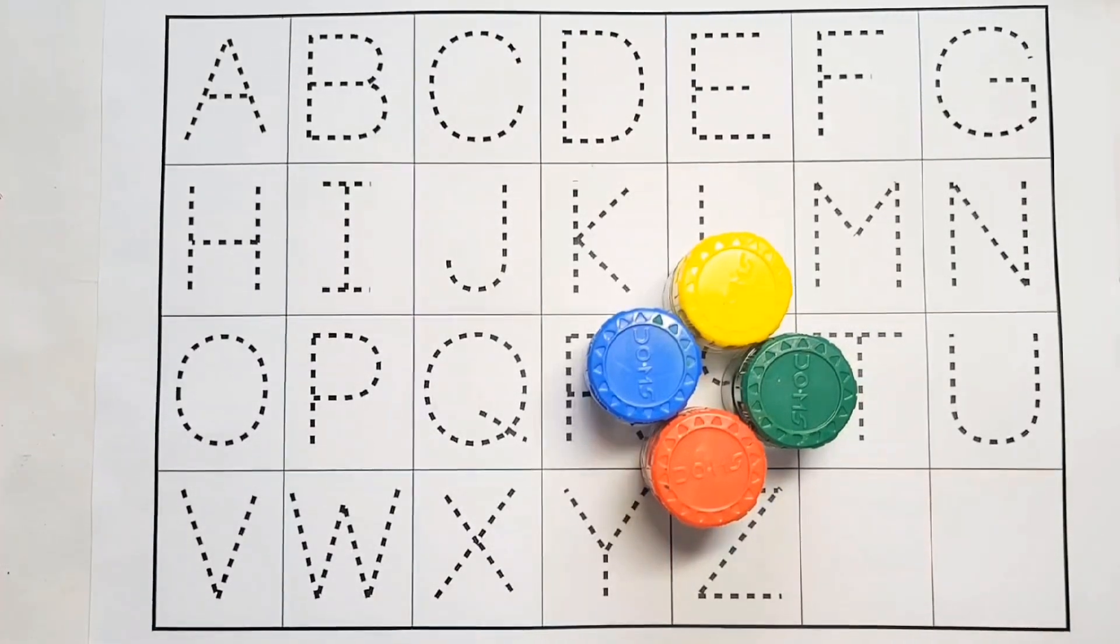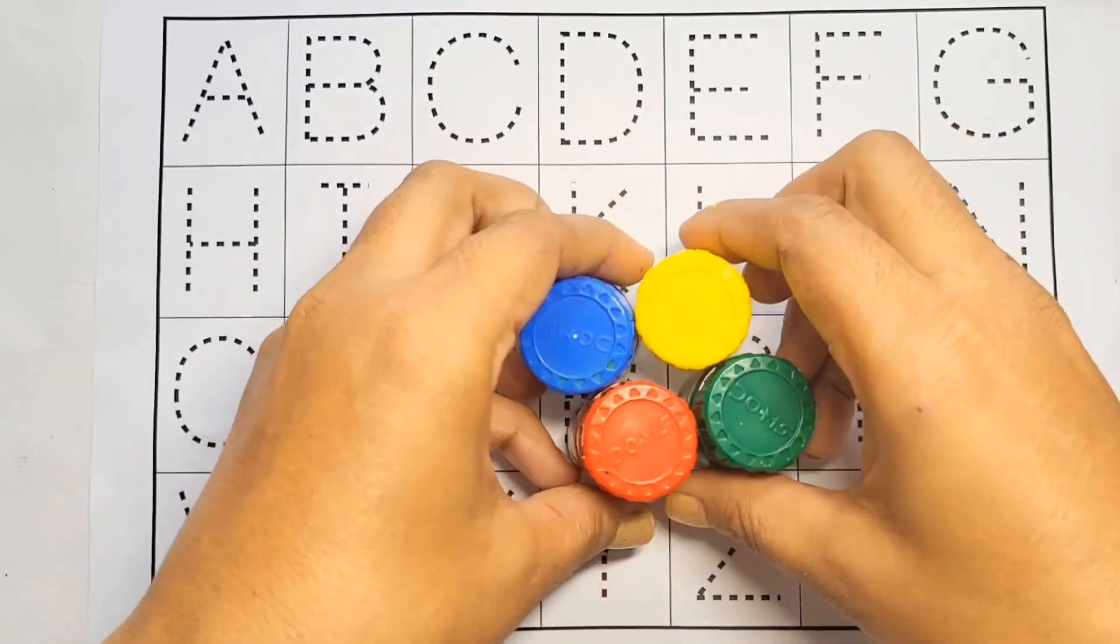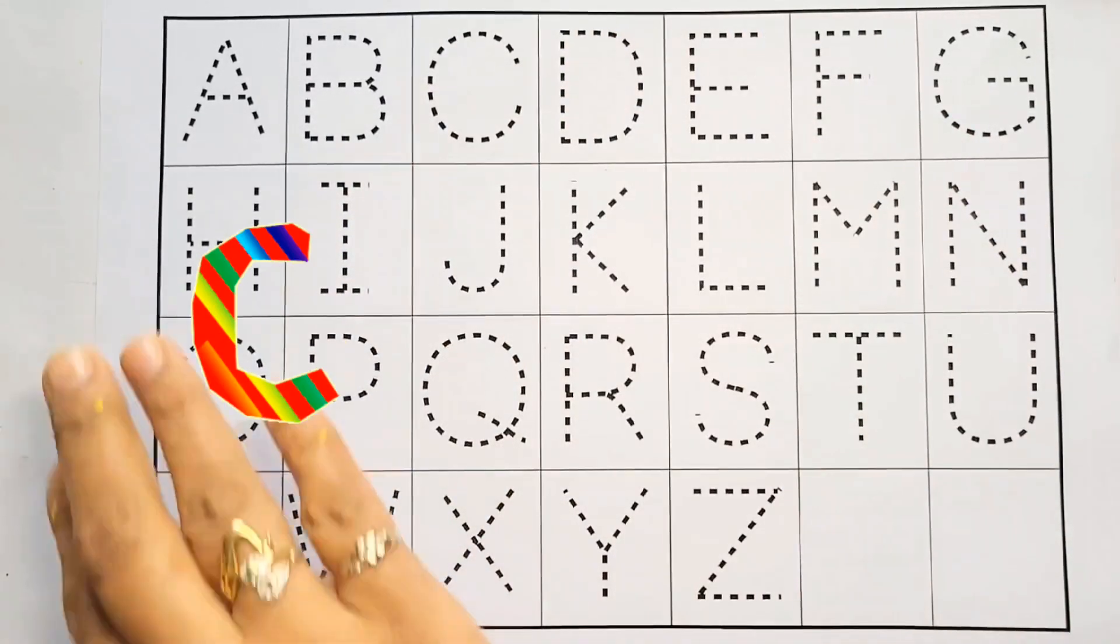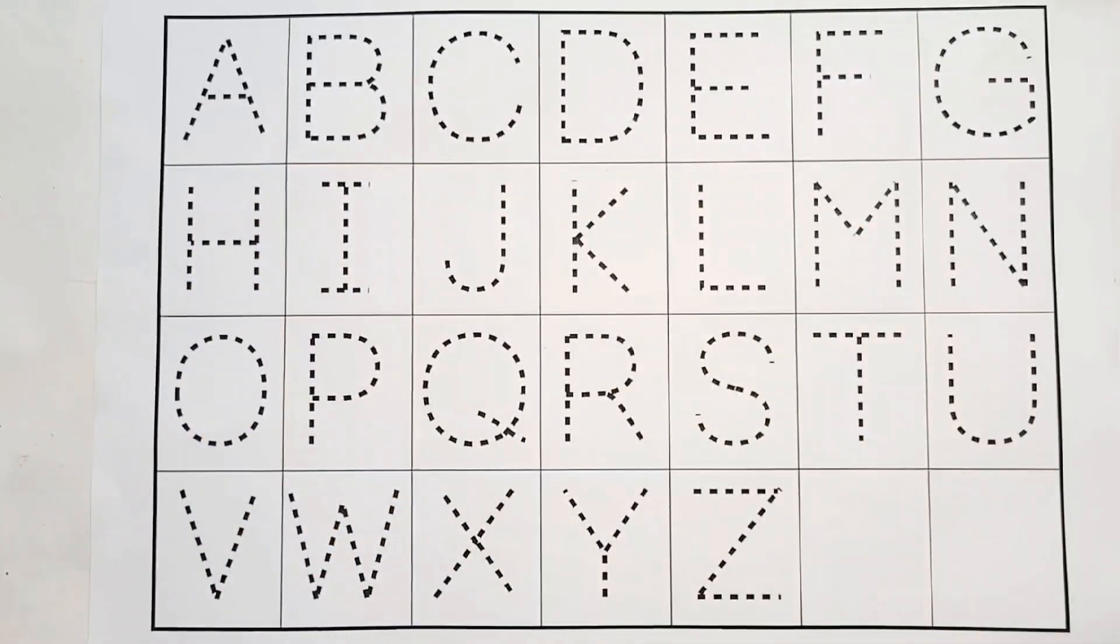Hello kiddos, welcome to my channel Chico Kids. Today we learn colors and alphabets, A to Z alphabet. A for apple, B for ball.